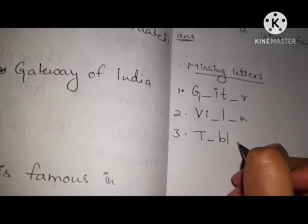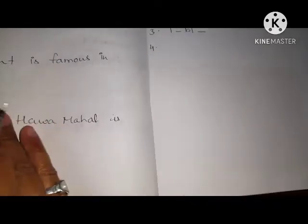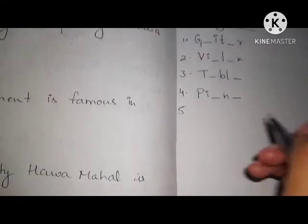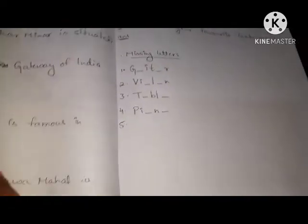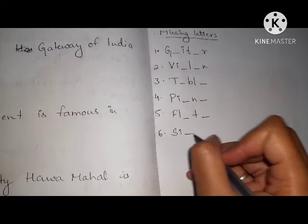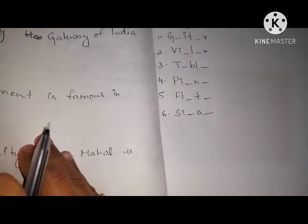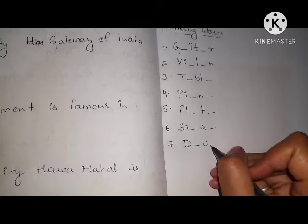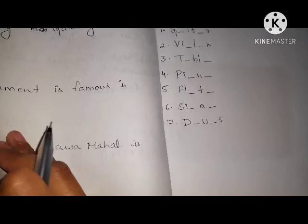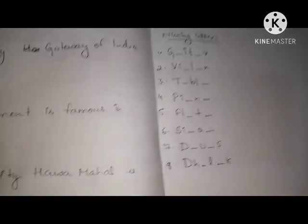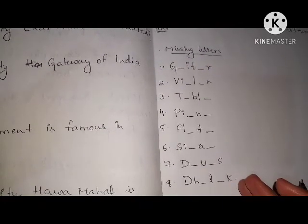Number three is T dash V-L dash. Number four is P-I dash and dash. Number five is F-N dash T dash D dash. Number six is S-I dash A dash. Number seven is dash dash S. Number eight is D-H dash L dash K. These are instrument names and you have to complete the missing letters.